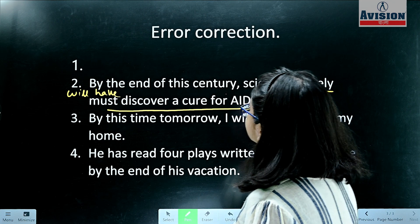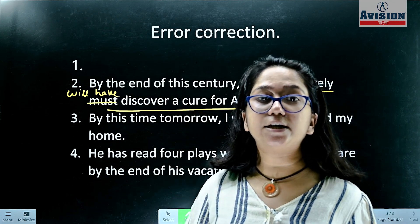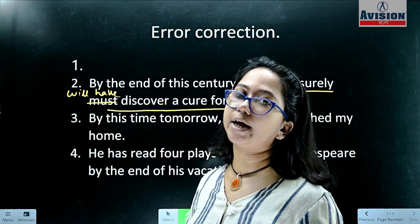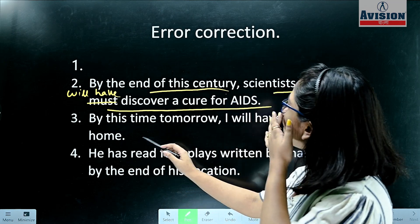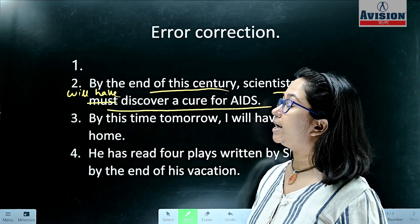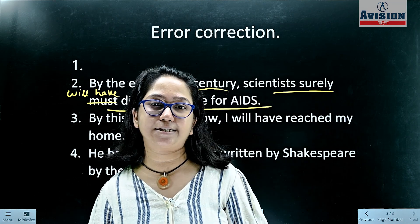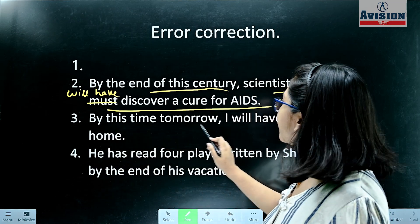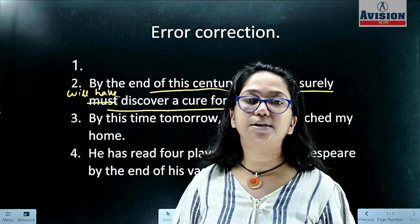The correct future perfect form is: 'Scientists surely will have discovered a cure for AIDS.' Scientists don't have a cure for AIDS yet. Another example: 'By this time tomorrow, I will have reached my home.' This sentence is perfectly complete — no incompleteness, no error.